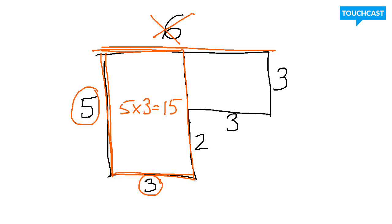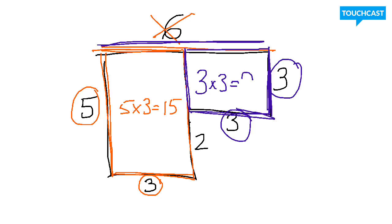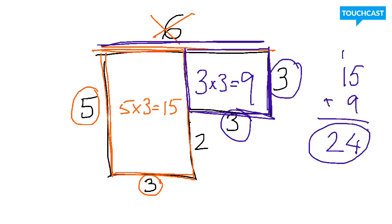Let's do the second rectangle in purple. What is the length of this side? It's three — given to us. And what's the length of this other side? We know it's not six because six was the entire side, so it's three. Three times three equals nine. Let's add them up: fifteen plus nine. Five plus nine is fourteen, carry the ten. One ten plus one ten is two tens. So the total area is actually twenty-four.